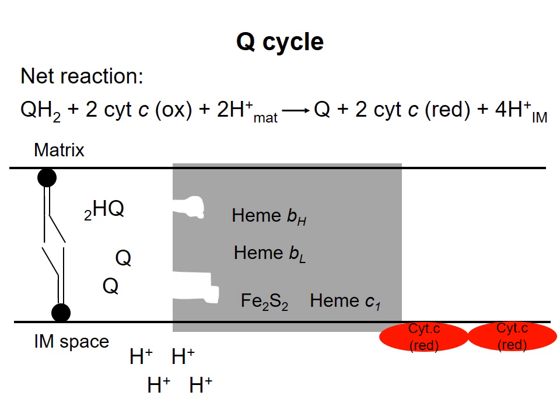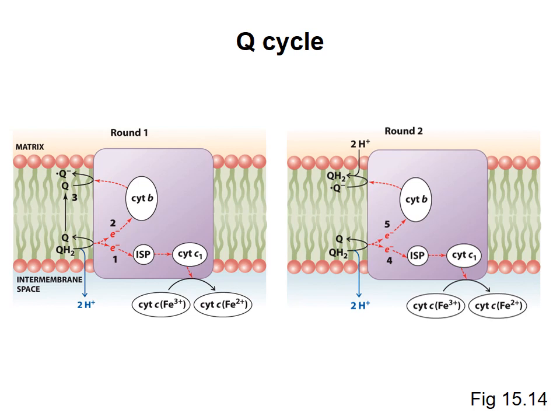The two reduced cytochrome Cs leave complex 3 to find complex 4. Now this figure from the textbook shows the two halves of the Q cycle. In the next video, I'll move on to look at complex 4, and I'll summarize the electron transport chain from NADH to oxygen.